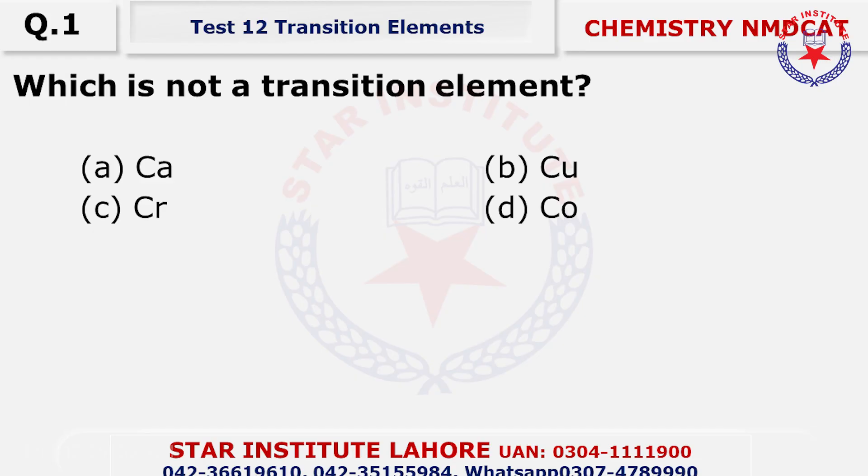Question number one: which is not a transition metal? The choice is alpha — calcium is an alkaline earth metal, it cannot be a transition metal, so choice is alpha.